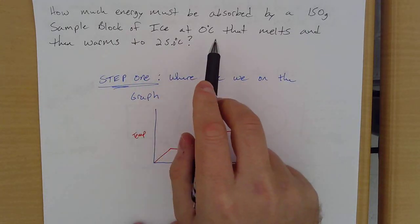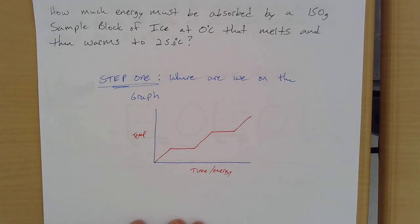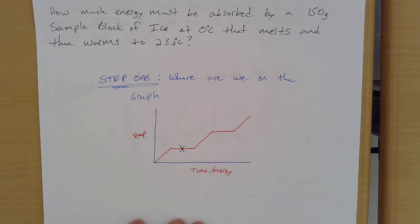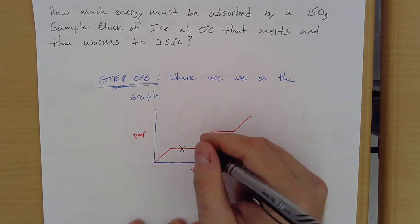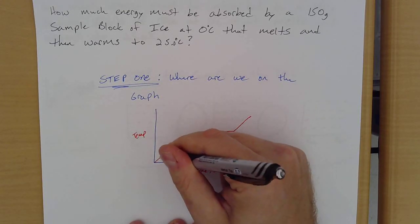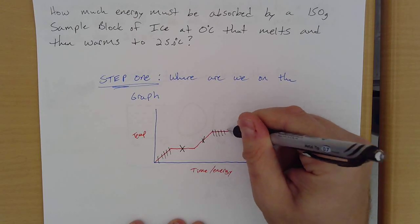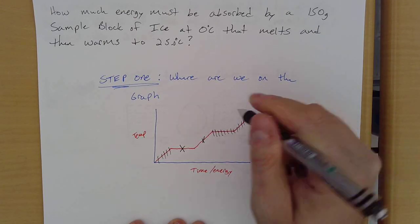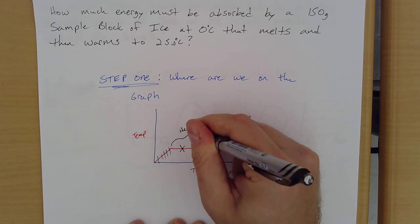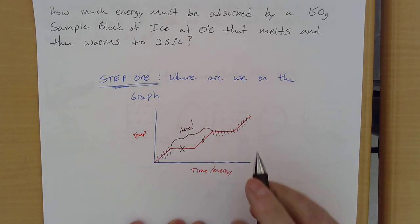Okay, so we're looking at, it's got to melt completely. So it's got to melt, so I'm definitely here on my graph. And then it's going to warm to 25 degrees. So I'm over here on this graph too. So these sections, I am not using. I am only here.